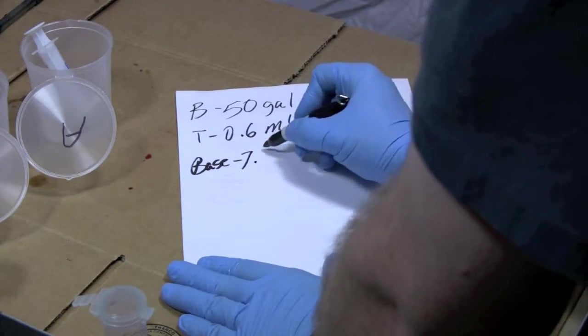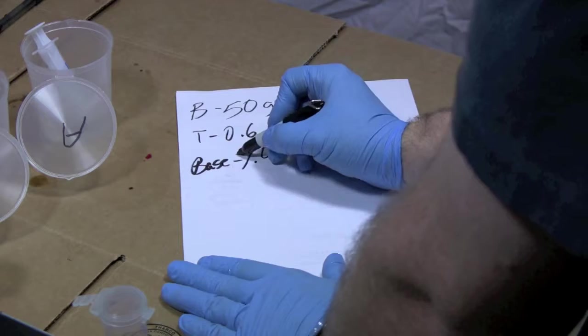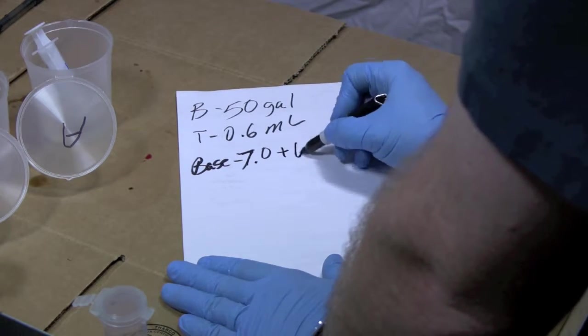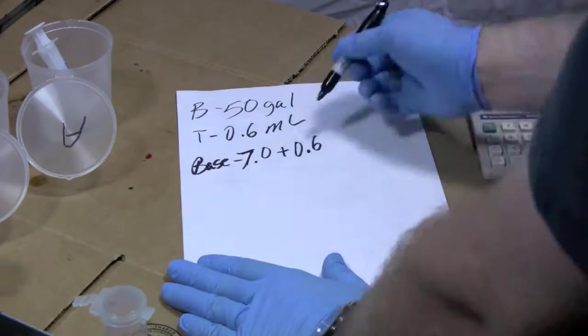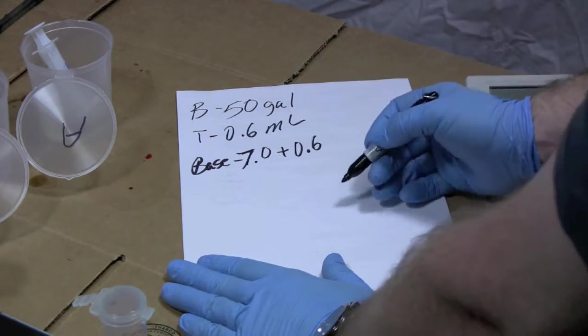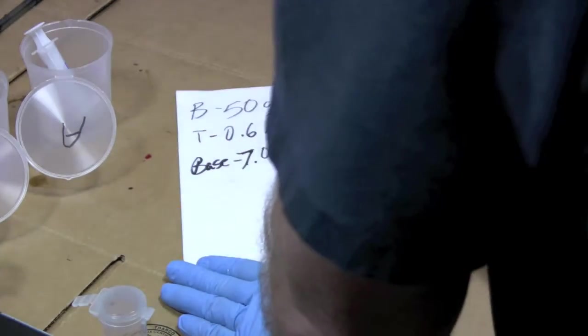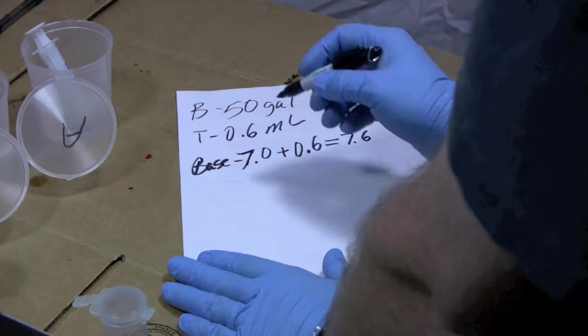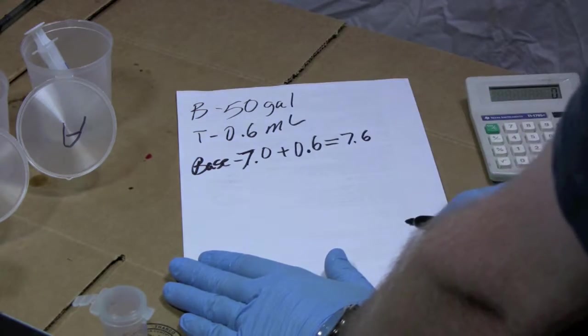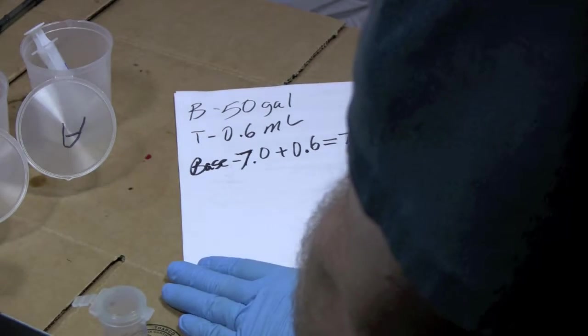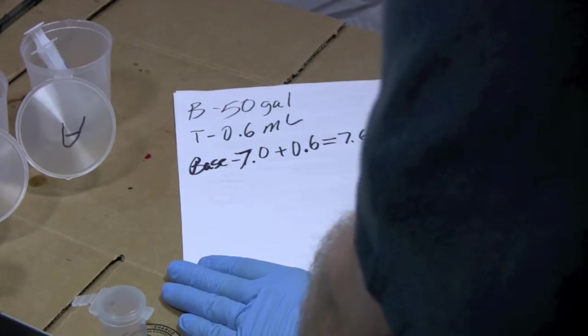I'm going to use 7.0. Okay. To that base, I add 0.6 because that's how much additional catalyst per liter of oil it takes to make biodiesel. I get 7.6. So for every liter of oil that I want to make biodiesel with, I need to add 7.6 grams of potassium hydroxide.